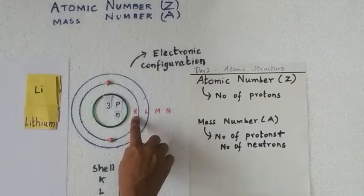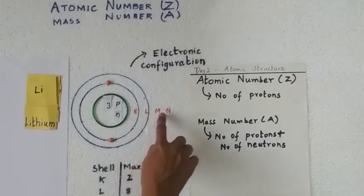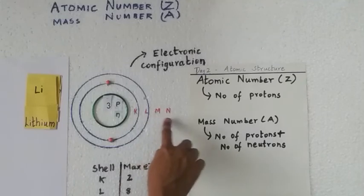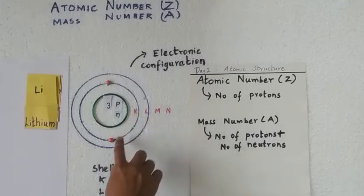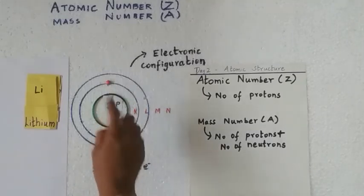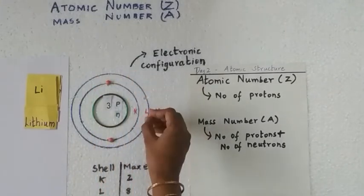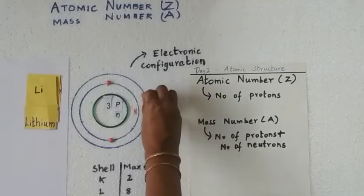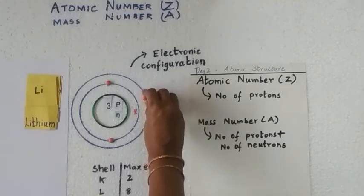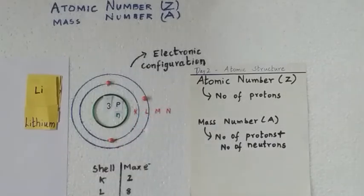The first shell is named K, the second shell L, then M, N, and so on — we will learn about this in detail later. The K shell can hold only 2 electrons. Since I have to add one more electron, I move to the next orbit, which is the L shell. So I am adding one more electron there. Lithium has 3 protons and therefore 3 electrons. It also has 4 neutrons.